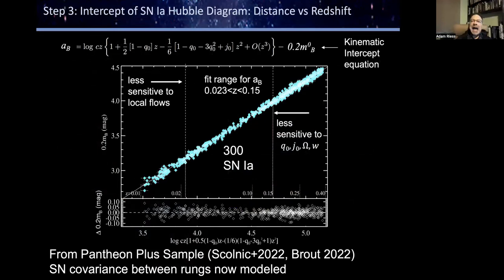Step three is to measure the expansion rate of the universe now using Type Ia supernovae, using expanded samples like the Pantheon Plus sample. We're essentially figuring out the characteristic brightness of Type Ia supernovae at a given redshift. One cannot do this exactly at redshift zero, so there are higher-order corrections for deceleration or even the third derivative of the expansion rate — what's called jerk — but these have very small impact at the 1% level. We don't measure too locally because we'd be sensitive to local flows, and we don't go to too high redshift, so we're not sensitive to higher-order corrections. A few hundred Type Ia supernovae at intermediate redshift are what we use.